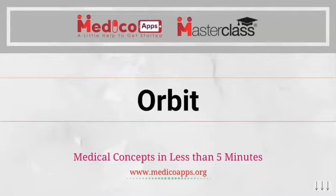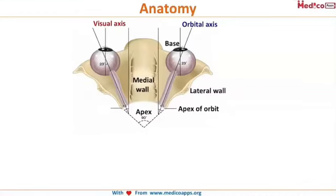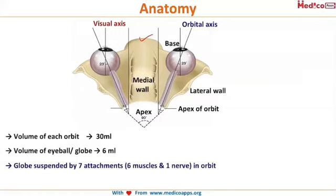Now let's get into our subject proper and start with the orbit — the outermost bony protection of the eye. The volume of each orbit is 30 ml, however the eyeball occupies only 6 ml of the orbit. The entire volume of the eyeball is only 6 ml, making it a very small structure compared to the size of the orbit.